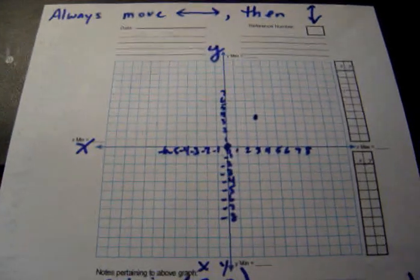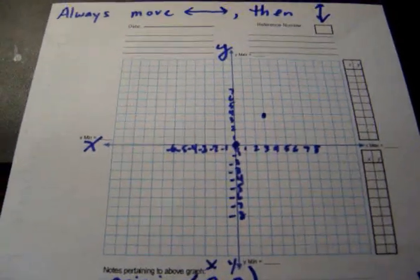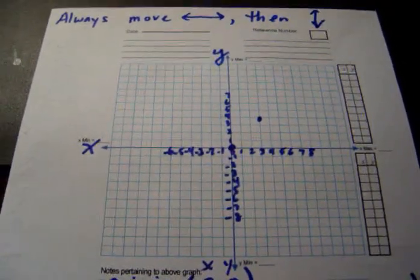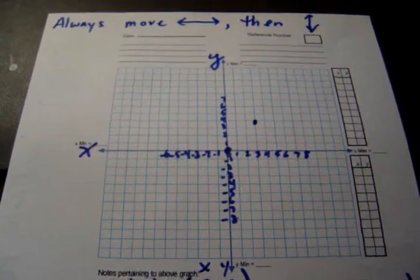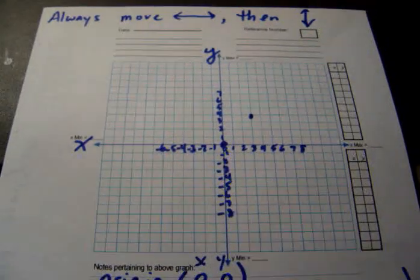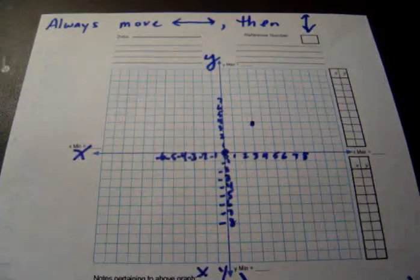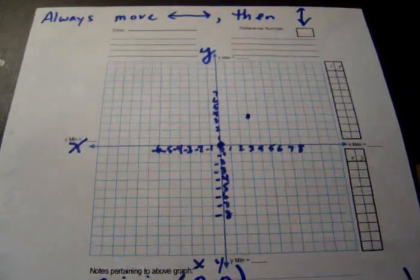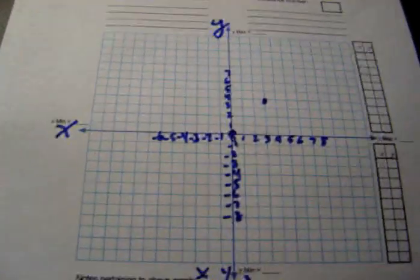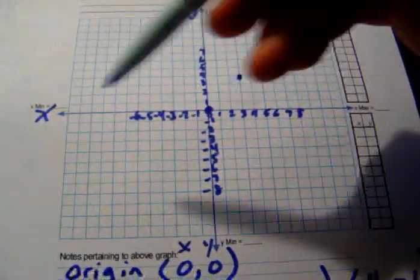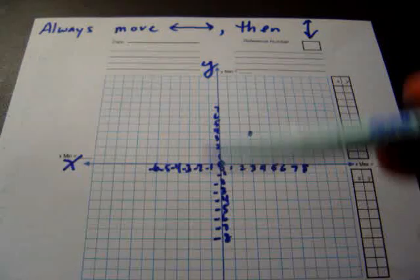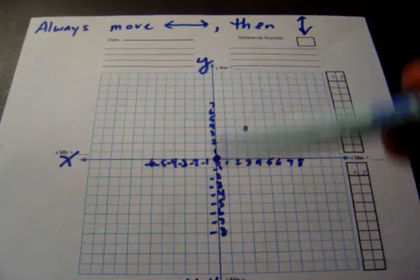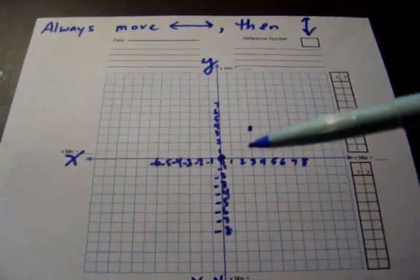First of all, we have our sheet of graph paper, and we're going to label our units. We have an x-axis and a y-axis. That enables us to have position from left to right and position up and down. Since we're graphing on a piece of paper which is two-dimensional, those are our two dimensions. The x-axis goes in the left-right direction — that's our distance left to right of our starting point. And the y-axis goes up and down — that's our distance either above or below our starting point.